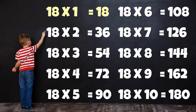Table of 18: 18 times 1 is 18, 18 times 2 is 36, 18 times 3 is 54, 18 times 4 is 72, 18 times 5 is 90, 18 times 6 is 108, 18 times 7 is 126, 18 times 8 is 144, 18 times 9 is 162, 18 times 10 is 180.